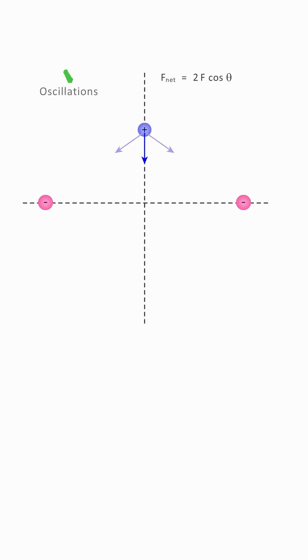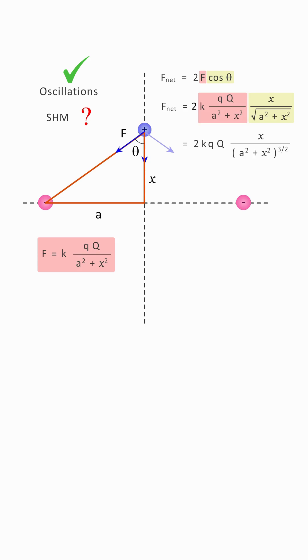So the particle does execute oscillations, but is the motion an SHM? If we look at the force acting on the particle, we can see that the force is not proportional to the displacement. So the motion cannot be SHM, because for an SHM, force is always proportional to the displacement.